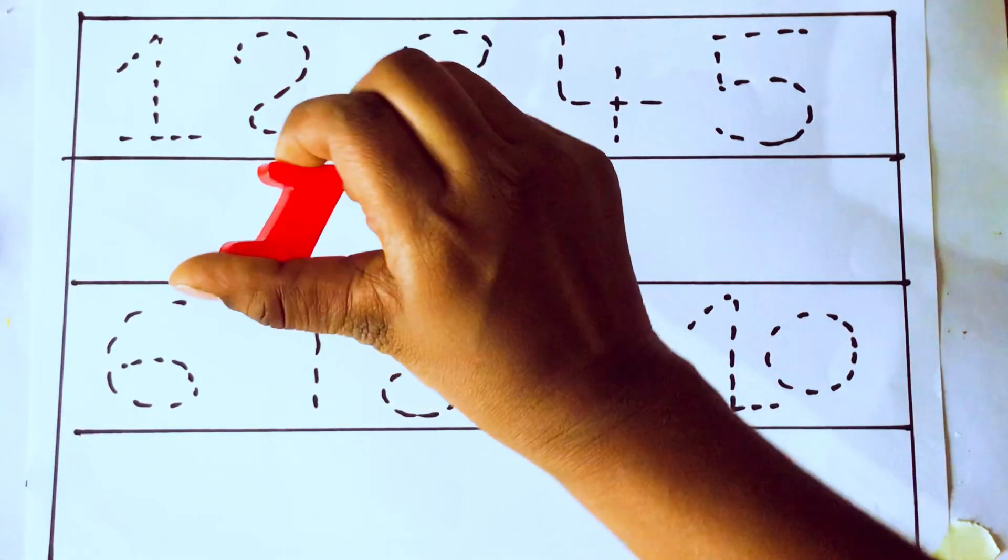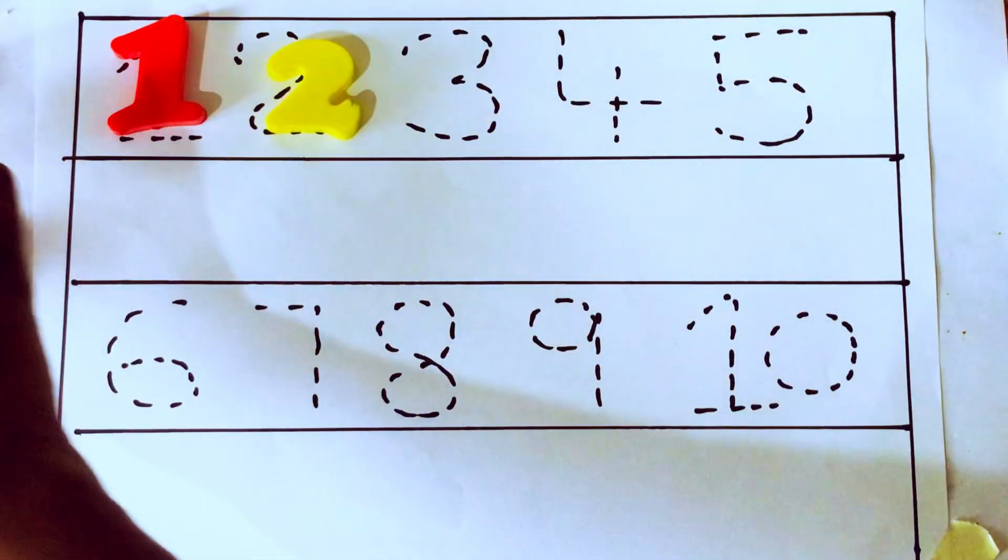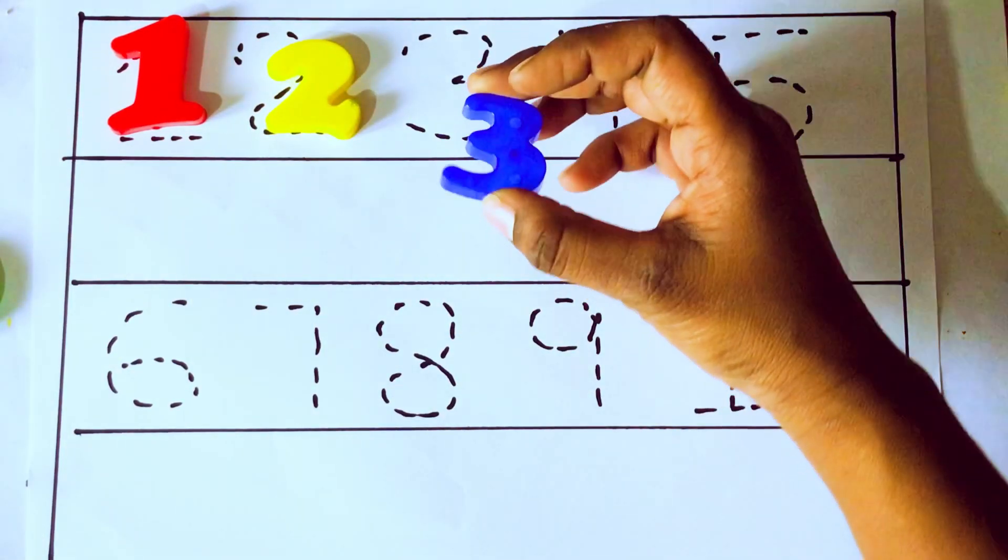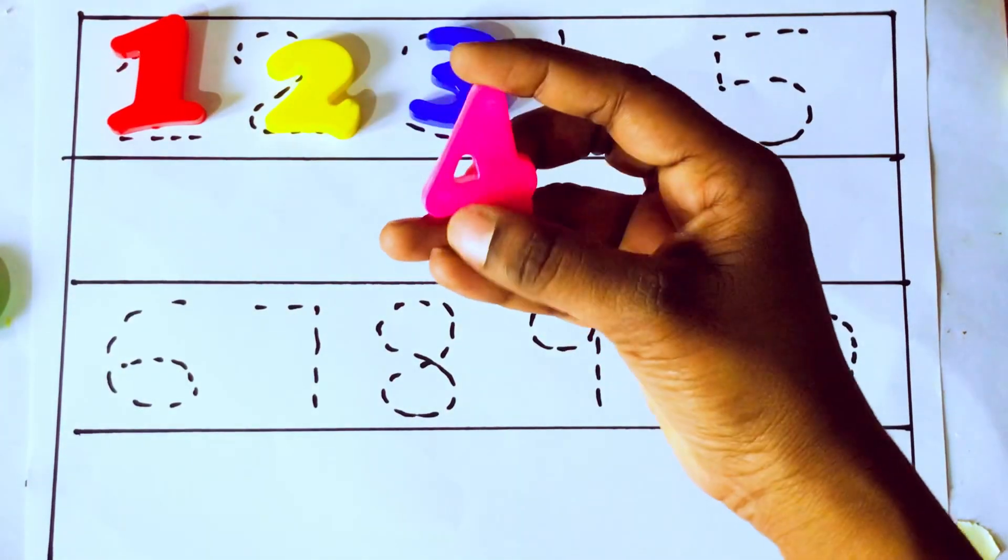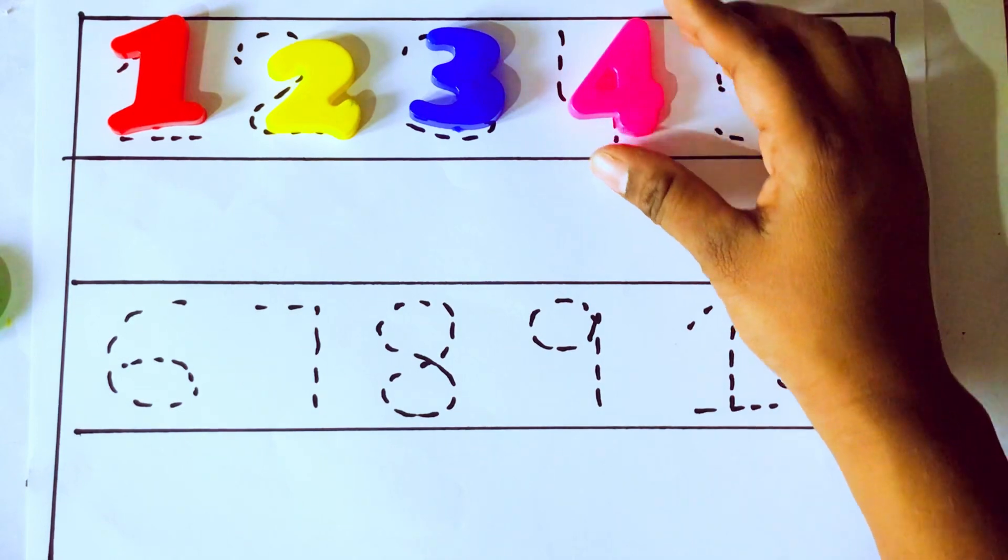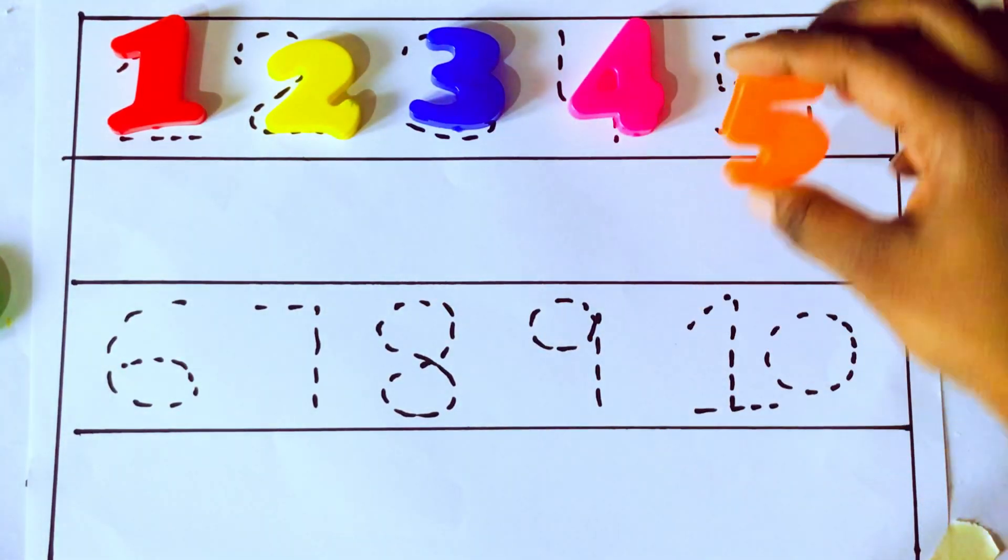1, O-N-E-1. Next 2, T-W-O-2. 2 after 3, which letter kids? 3, T-H-R-E-E 3. Next 4, F-O-U-R 4. 4 after 5, which letter kids? 5.